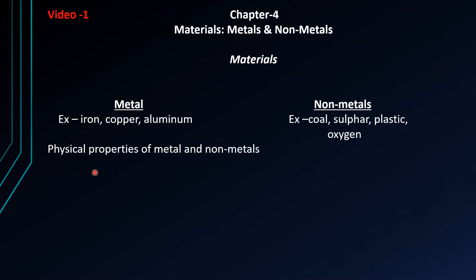Now, physical properties of metals and non-metals. What are the physical properties of metals and non-metals? Let's see. First is hardness — all metals are hard, with the exception of mercury.